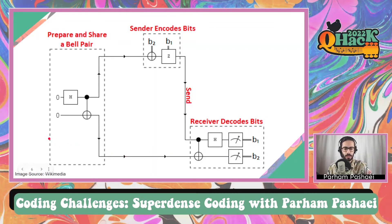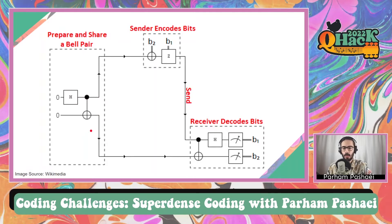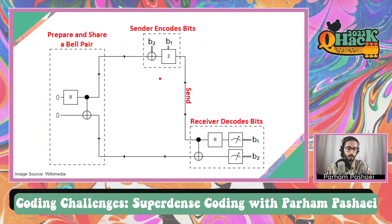It starts with entangling our qubits using a Bell pair, which consists of a Hadamard gate and a CNOT gate, for a maximally entangled case. Now in this problem you will be asked to use a non-maximally entangled case, so instead of the Hadamard gate we will use the RY gate. Then the sender, which is normally called Alice, has to encode the bits.